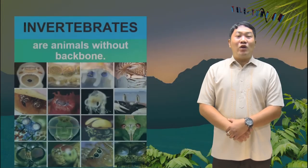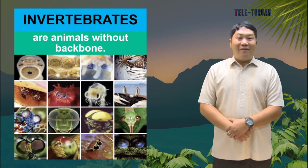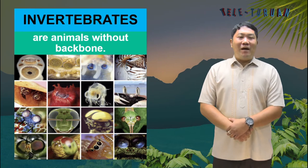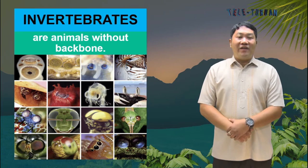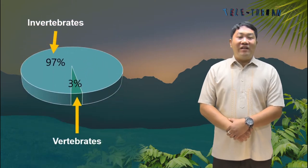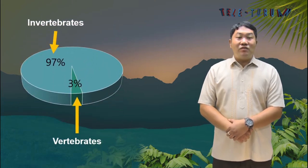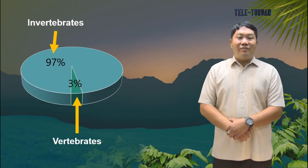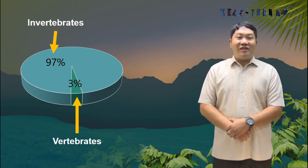Invertebrates do not have a backbone. However, the absence of a backbone does not hinder or affect their survival. In fact, invertebrates make up roughly 97% of animals on Earth, while vertebrates make up only 3%.